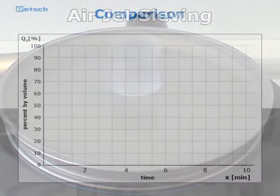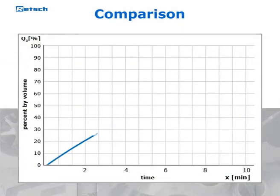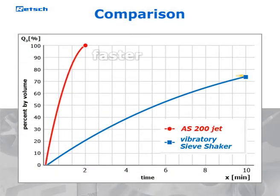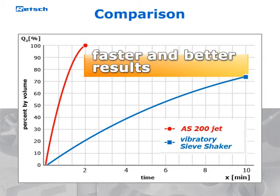Compared to vibratory sieve shakers, the AS200Jet provides for fine materials sieving results with a higher degree of separation efficiency in only a fraction of the time.